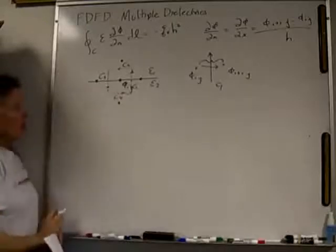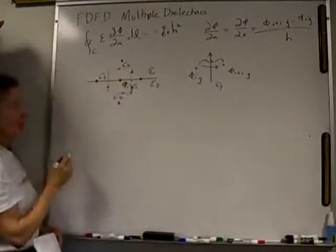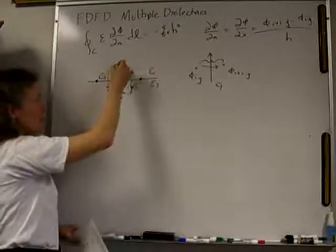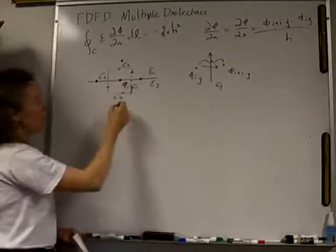If I were on the left-hand side, it would be this point minus that point times H. If I were on the top, it would be this minus that. And if I were on the bottom, it would be this minus that.